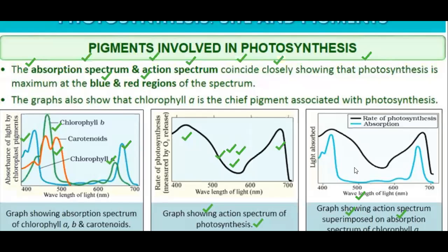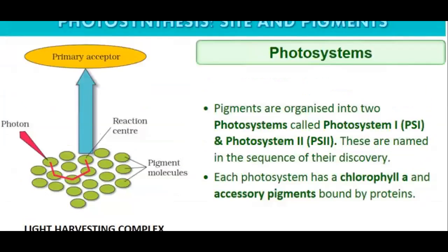The blue graph here is the absorption spectrum of chlorophyll a, and another graph shows the absorption spectrum superimposed. This tells us that in the red and blue regions — around 400 nm and 700 nm — photosynthesis is occurring at the highest rate. These are the photosystems responsible for carrying out photosynthesis.